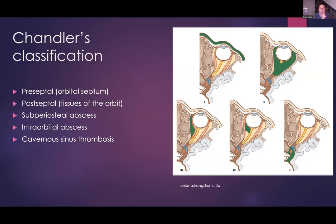No talk on orbital inflammation would be complete without mentioning Chandler's classification. To some extent it has been superseded by imaging because Chandler's classification was based on clinical and operative findings - it preceded CT imaging. Almost all studies that report on orbital inflammation talk about the various stages of orbital inflammation. The five stages are on the left hand side. However, there are a number of issues with the classification. Firstly, not all the complications are truly orbital - cellulitis of the lids isn't really an orbital problem, it's more of a superficial facial problem.